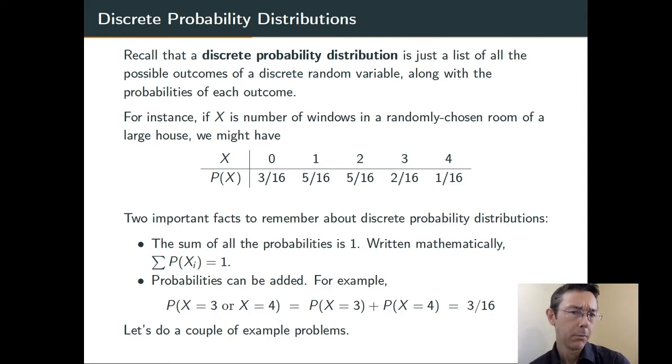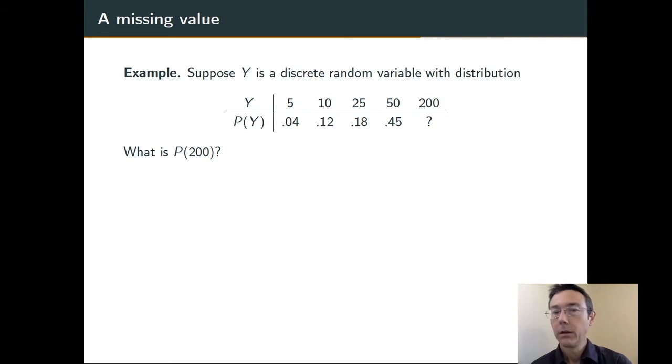Let's do an example problem or two. So here's another discrete probability distribution. We have this random variable Y. It's got 5 possible outcomes: 5, 10, 25, 50, and 200. And we're given probabilities for 4 of those 5 outcomes. We can find the 5th.